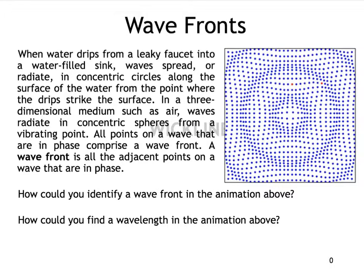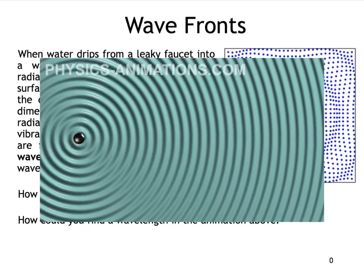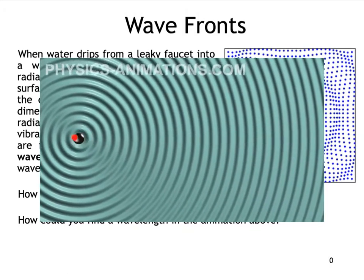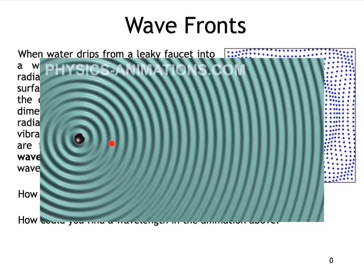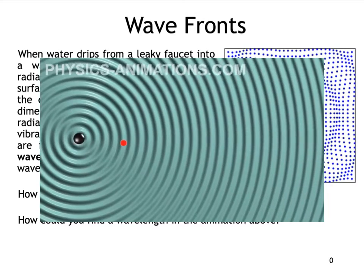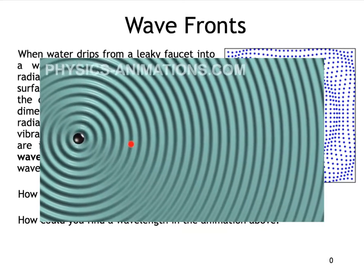Wavefronts are these concentric circles of crests that are radiating outward from a point source. So if you have a vibrating particle right here, it's going to send these wavefronts outward from the circle. As the object is vibrating, it is sending these concentric circle waves outward from the center — that's what we call a wavefront.